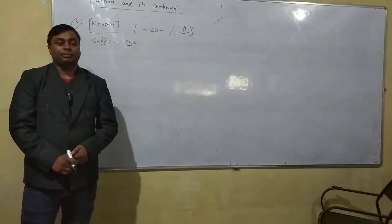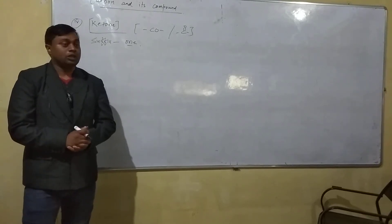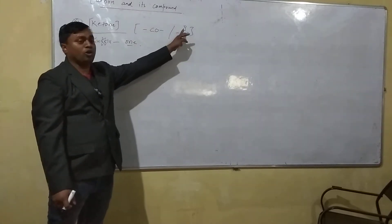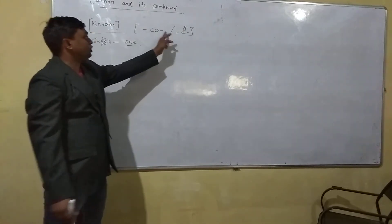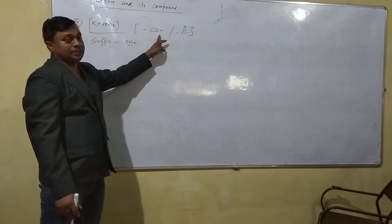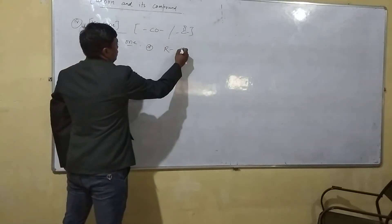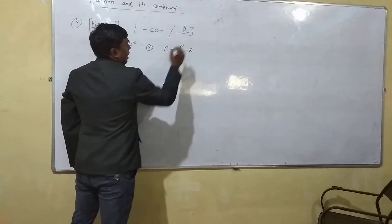Hello students, in this video I am going to explain the naming of ketones. So, ketone has a formula C=O, or C double bond O. In both sides of this ketone, alkyl groups are there. So it is generally represented as R-C=O-R.